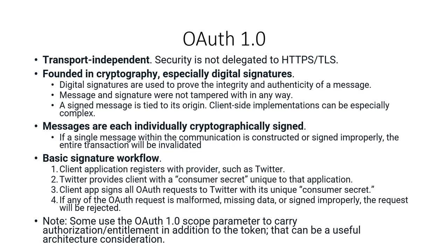In the basic OAuth 1.0 signature flow, the client application registers with the provider such as Twitter. Twitter provides the client with a consumer secret unique to that application. The client app signs all its OAuth requests to Twitter with its unique consumer secret. If any OAuth request is malformed, missing data, or signed improperly, the request will be rejected.